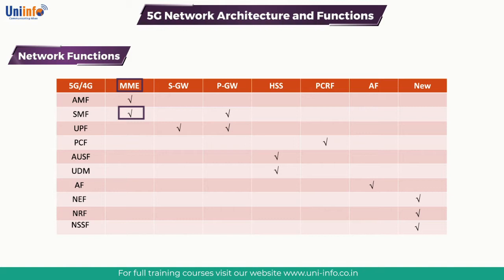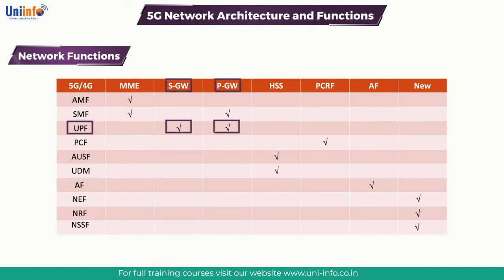Some part of MME is turned into SMF, which provides session management functionality. In addition, it also combines some control plane functions of the SGW and PGW. SMF also does the job of giving IP addresses to user equipments. UPF takes on some roles of SGW and PGW — SGW and PGW were responsible for data traffic, and UPF does this traffic transport. Data traffic comes from UE to gNodeB to UPF, therefore UPF can be called a gateway for the internet or other networks.